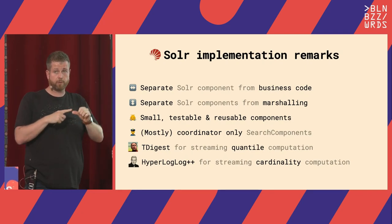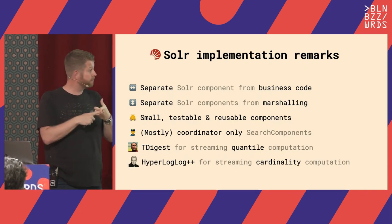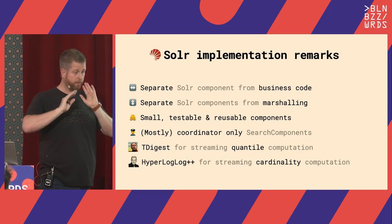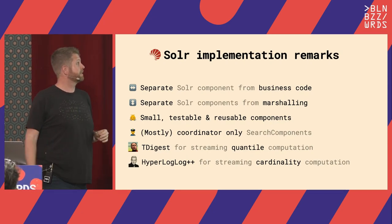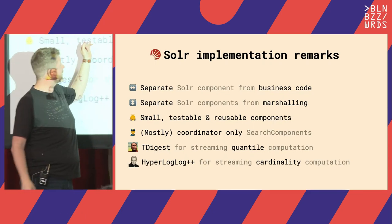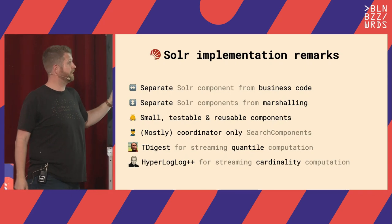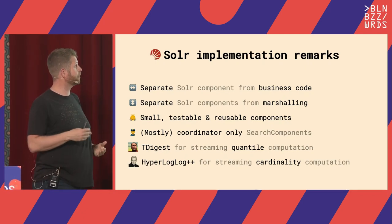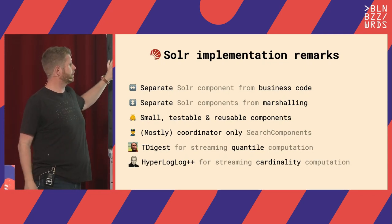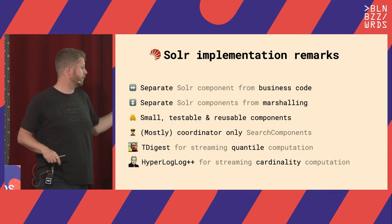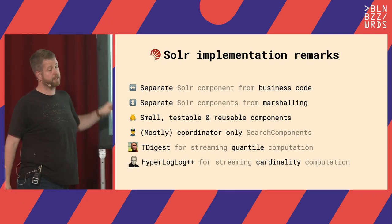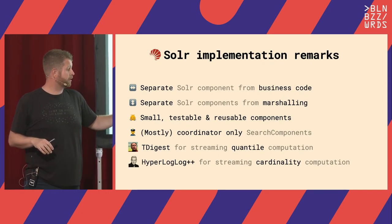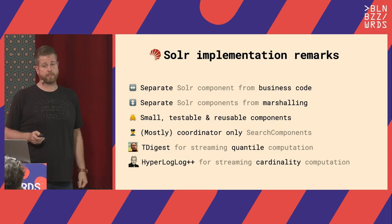What we learned from implementing Solr components: you need to separate Solr components from business code. The Solr search component interface is horrible — you want the Solr magic in the search component and your business code in completely different, testable classes that contain no Solr code. Separate Solr components from marshalling; the key word here is 'named list.' We built very small, reusable components. The estimated hit count component comes in play later for facets. Most components are coordinator-only, which makes them easy to build. For quantile computation, we used the T-digest library — zero overhead, zero heap. For cardinality computation, we used HyperLogLog++ contained in Solr.